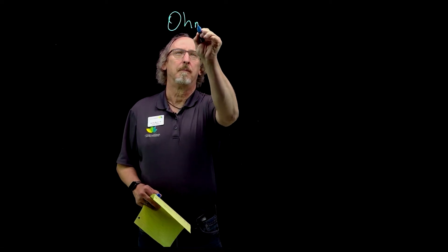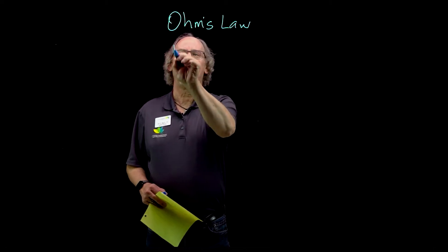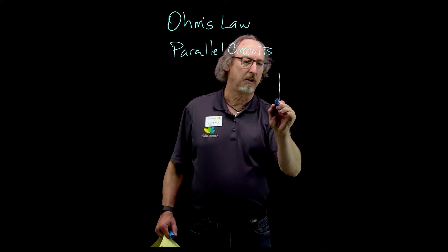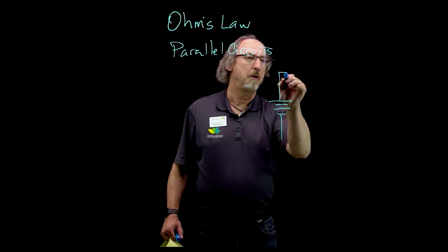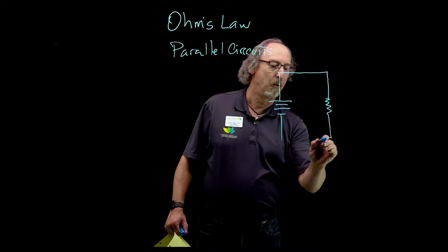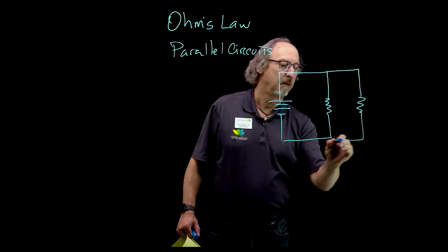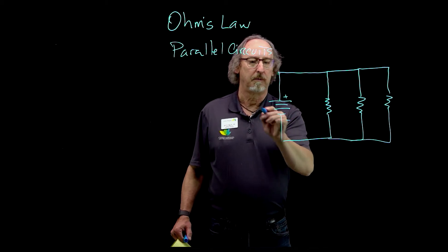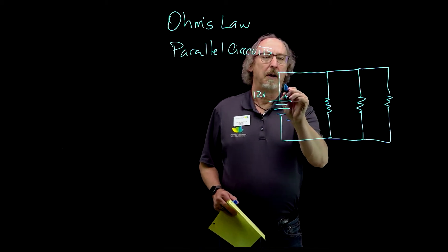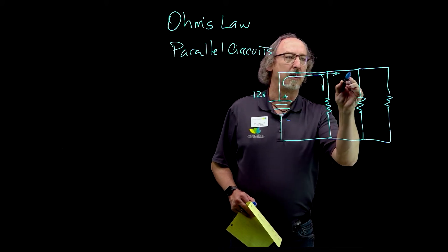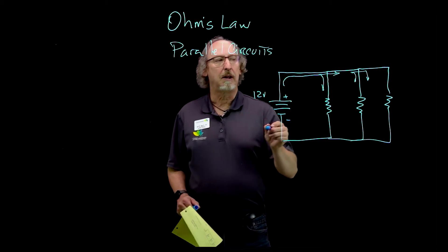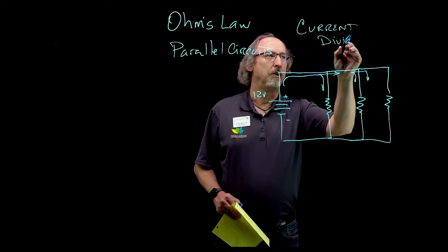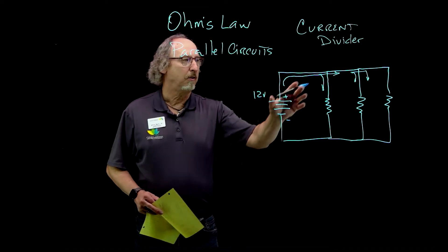We're going to look at Ohm's Law with parallel circuits. A parallel circuit basically tells you that you have more than one path for electrons to flow — you have these nodes. So let's take it out to three branches; my electrons have different paths they can take. A parallel circuit is a current divider, where a series circuit is a voltage divider. My current has more than one path.